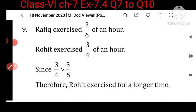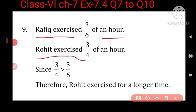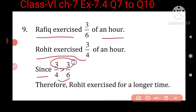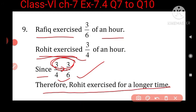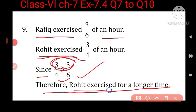Rafiq's exercise is 3 upon 6 of an hour and Rohit's exercise is 3 upon 4 of an hour. Since the numerators are the same, the smaller denominator is the greater fraction. So 3 upon 4 is greater than 3 upon 6. Therefore Rohit exercised for a longer time.